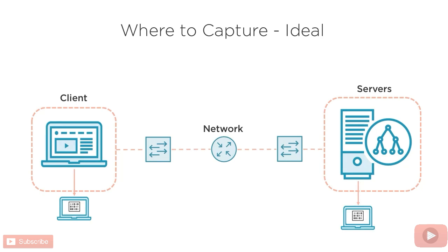When troubleshooting slow file transfers or slow applications, it's absolutely ideal to capture packets both at the client and the server end at the same time. Requests can be seen leaving the client and then arriving at the server, as well as any transactions that the server makes to other systems such as databases to fulfill that request. Dual-side captures can also help us to see if one direction or the other is suffering from packet loss.